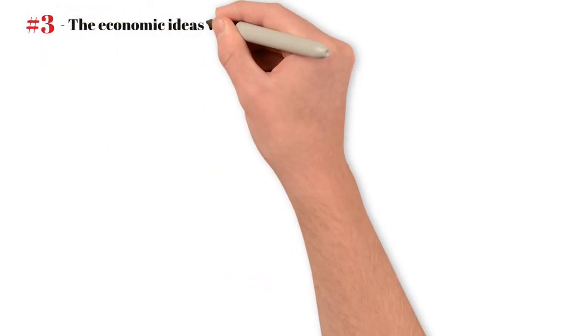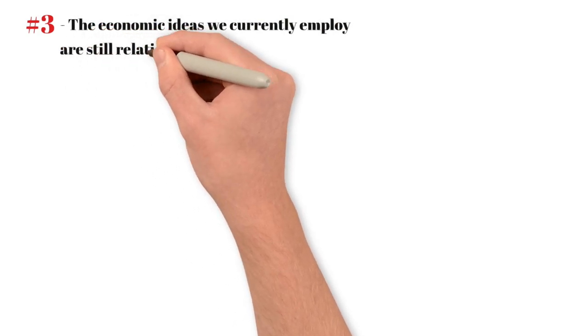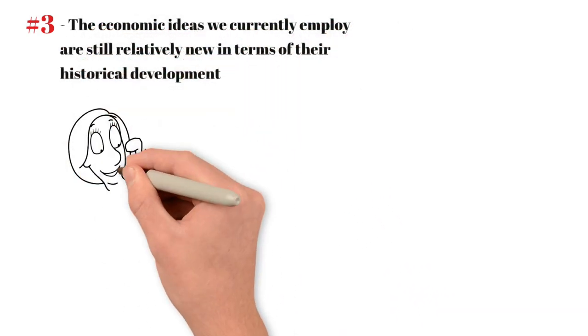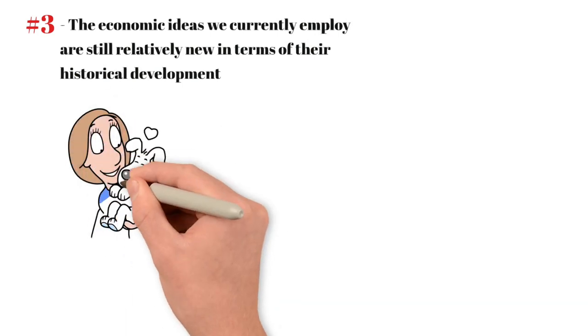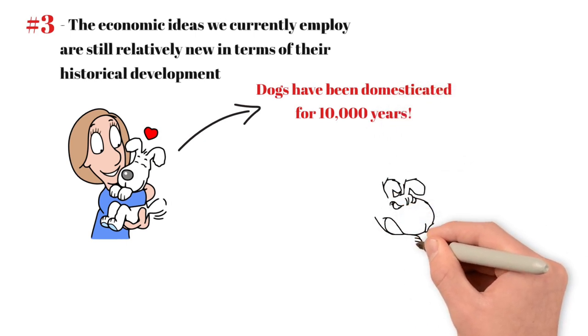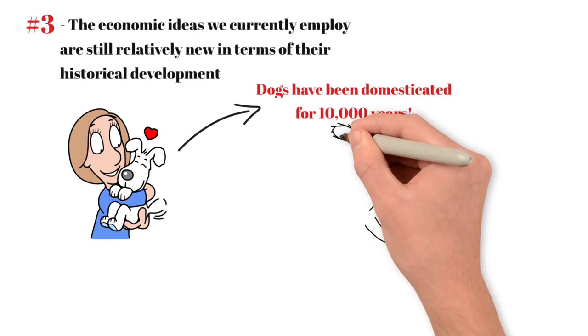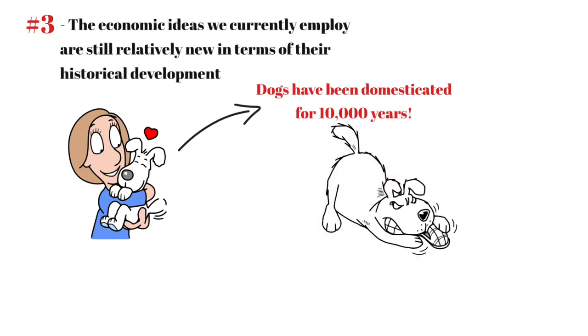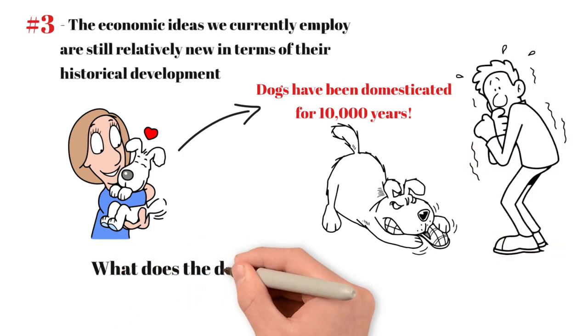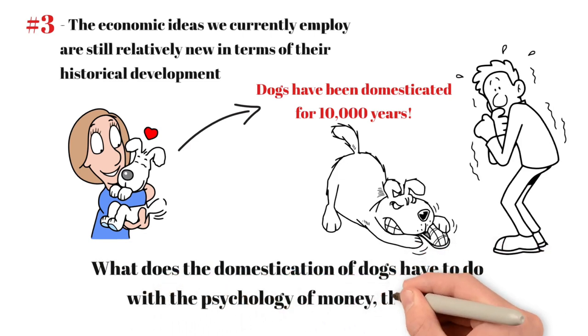Number three: The economic ideas we currently employ are still relatively new in terms of their historical development. A small poodle doesn't look much like its wild relatives, which were similar to wolves. This is because dogs have been domesticated for 10,000 years. But it surprises many dog owners when their pets show wild and aggressive behavior, like chasing after squirrels or cats. It turns out that even after all these years, those natural wild instincts haven't completely disappeared.